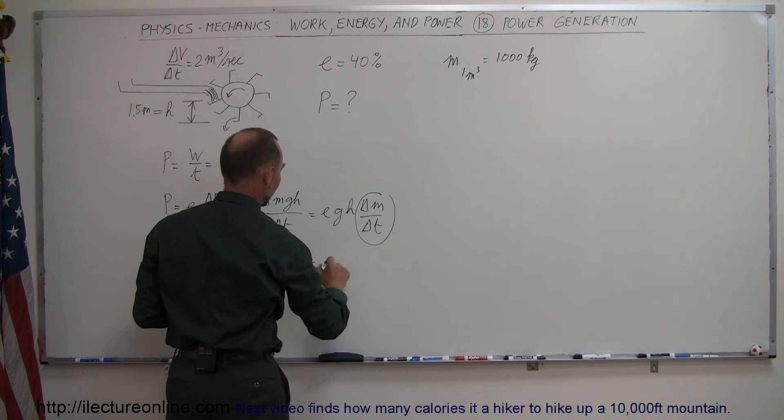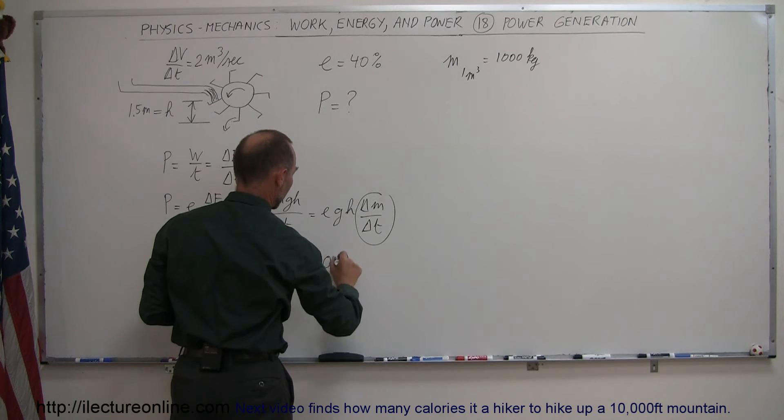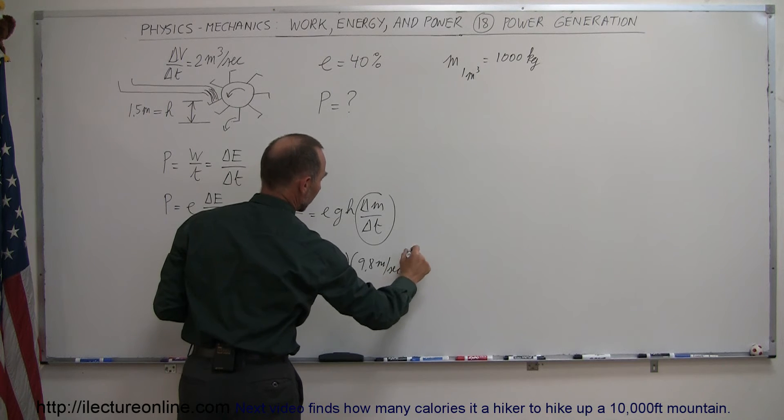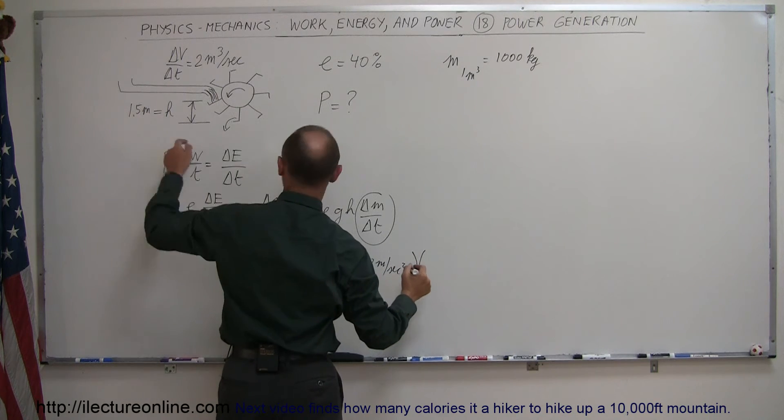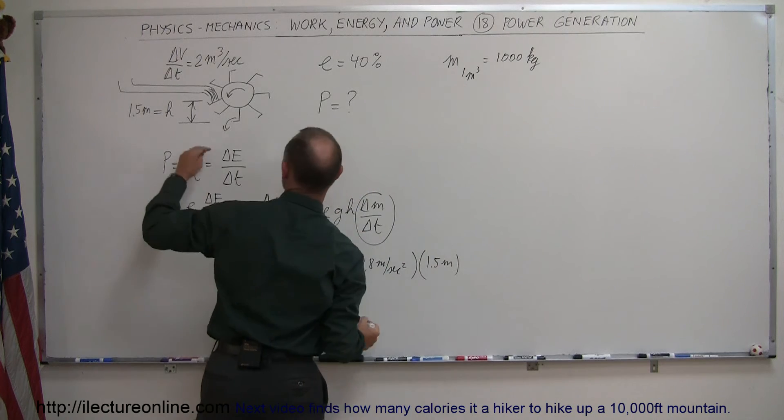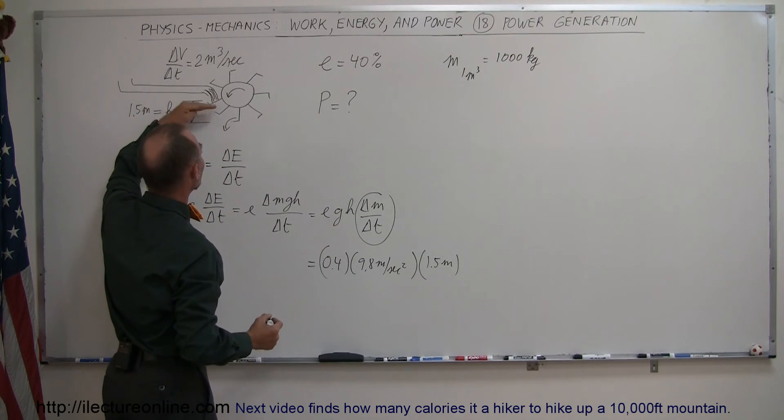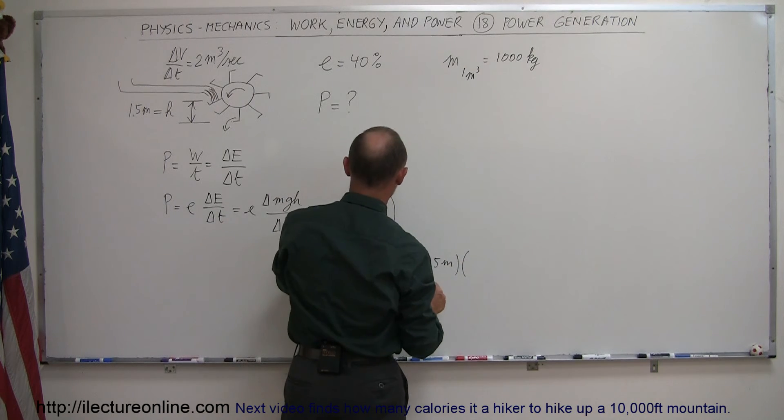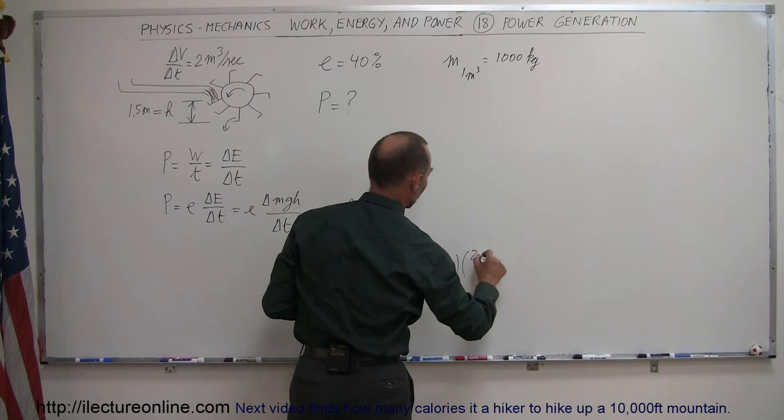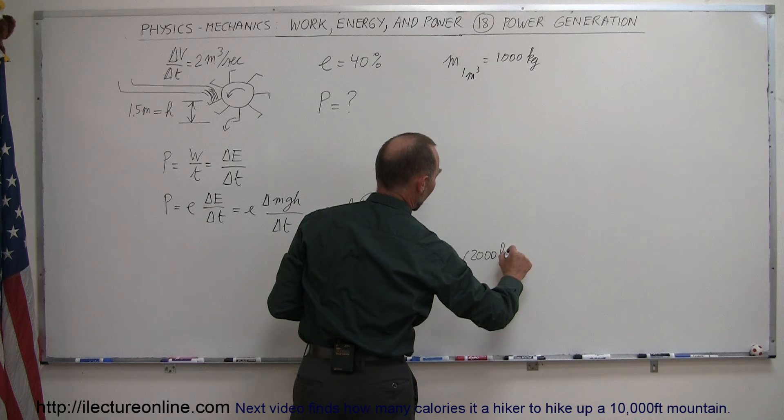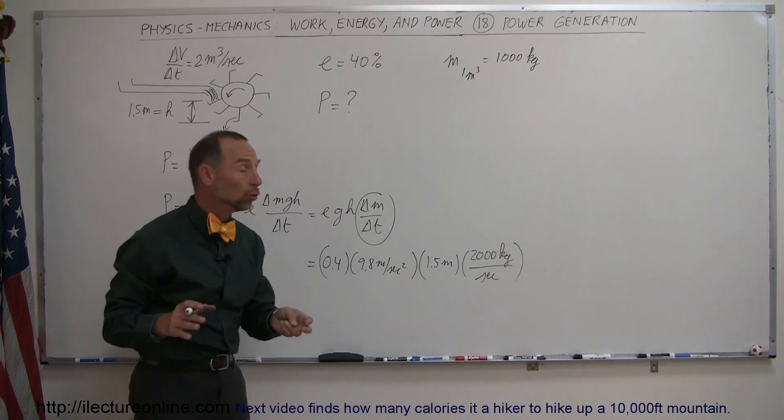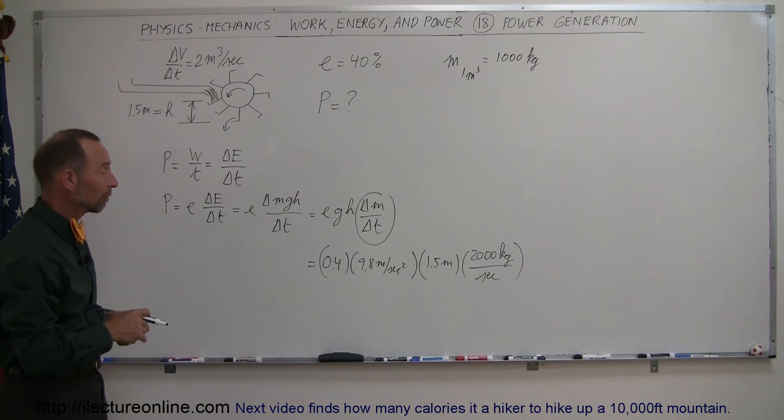So this is equal to the efficiency of 0.4 times g, 9.8 meters per second squared, times h, which we said was 1.5 meters. So the water drops through a height of 1.5 meters as it's making the turbine turn around. And then the amount of mass of water per unit time is 2,000 kilograms per second.